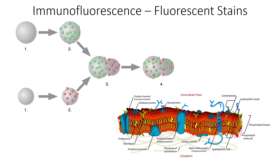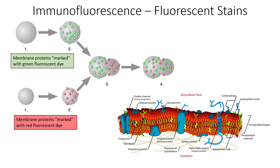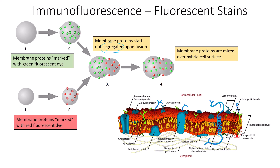Immunofluorescence also helped us learn about the cell membrane. We took a cell with membrane proteins marked with a green fluorescent dye, then took a completely different cell and marked their membrane proteins with a red fluorescent dye. We allowed the two cells to fuse. When those cells fused, the markers of each color remained segregated because they didn't have enough time to mix. But after a certain amount of time, membrane proteins were mixed over the hybrid cell surface. This gave rise to our understanding that proteins embedded in the phospholipid bilayer are not rigidly stuck — they do, in fact, move.